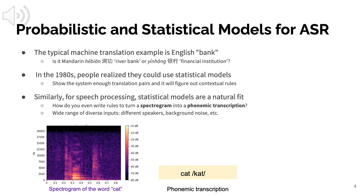Similarly for speech processing, statistical models are a very natural fit. When you have human speech, it's obviously very hard to write rules to convert it into a transcription — whether in normal spelling or phonemic notation like the International Phonetic Alphabet. There's a lot of diversity: different speakers, different amounts of background noise, different accents. If you look at a spectrogram — the visual representation of a recording — for the word 'CAT', it's really not obvious how you'd write rules to convert that into the letters C-A-T. That's why statistical models and probabilistic machine learning are critical for speech recognition.